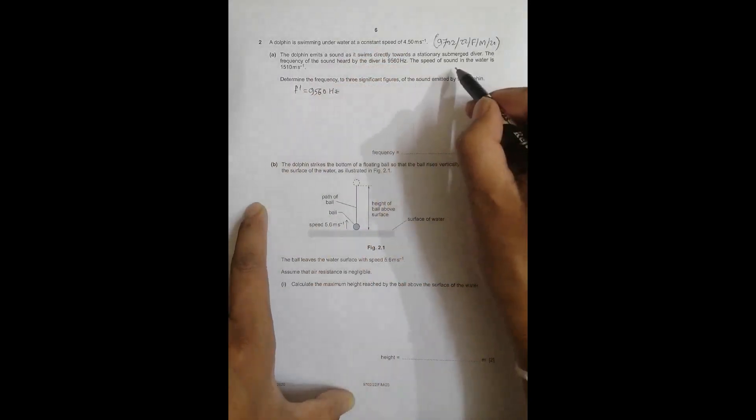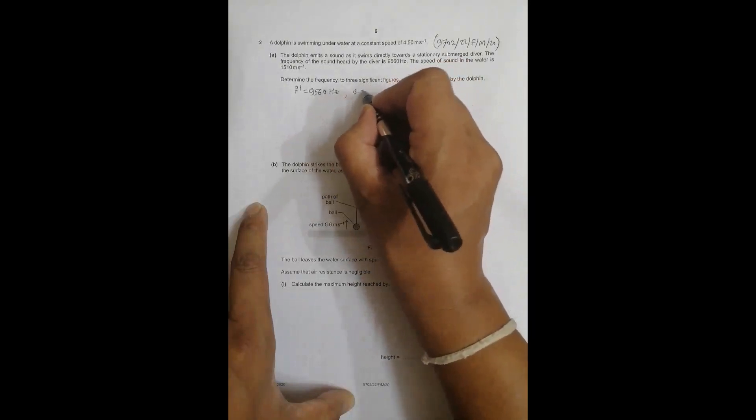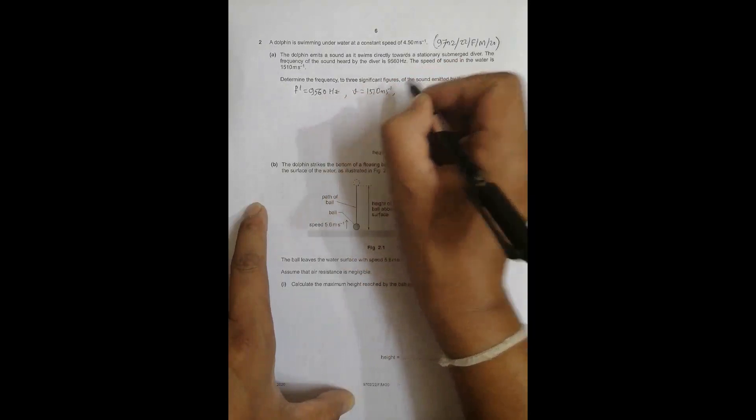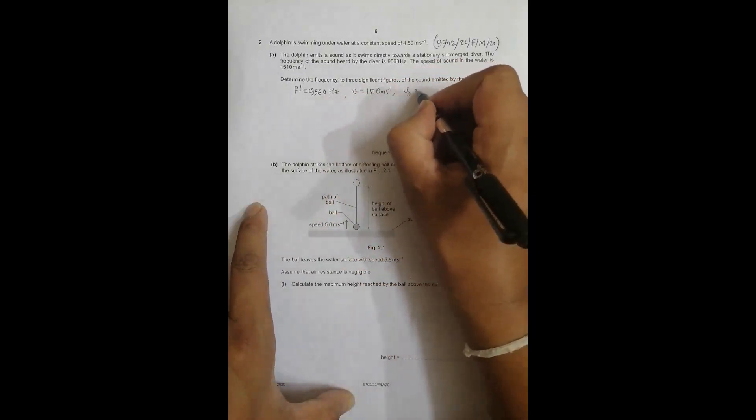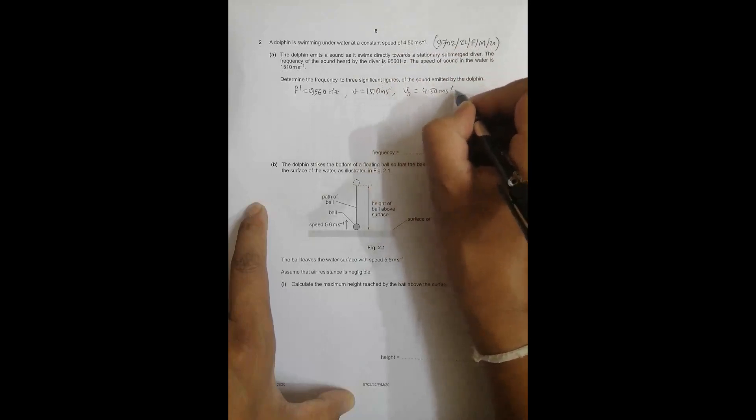The speed of sound in water is 1510 meters per second, so V equals 1510 m/s. The velocity of the source of sound, which is the dolphin, equals Vs = 4.50 meters per second.